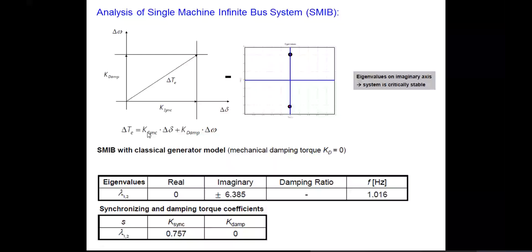The synchronizing torque coefficient is defined using the active power transfer relationship: P equals V1·V2 divided by X times sine of delta. The synchronizing torque coefficient is the partial differentiation of P with respect to delta. So whether you consider P or T, the synchronizing torque coefficient is this partial derivative with respect to delta.